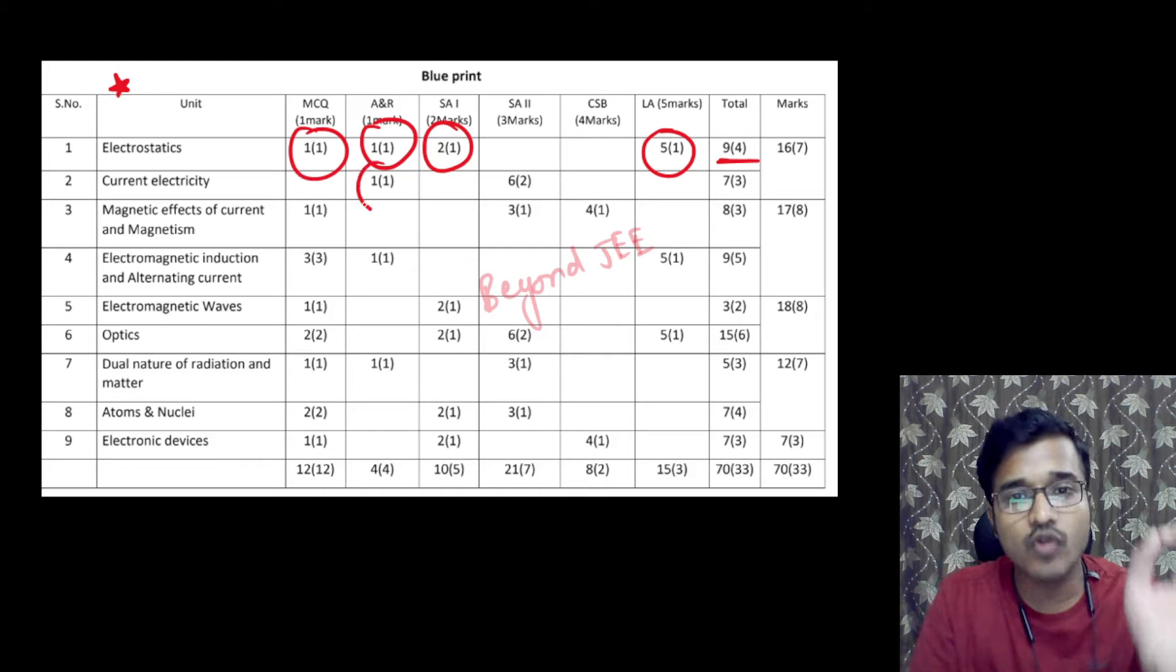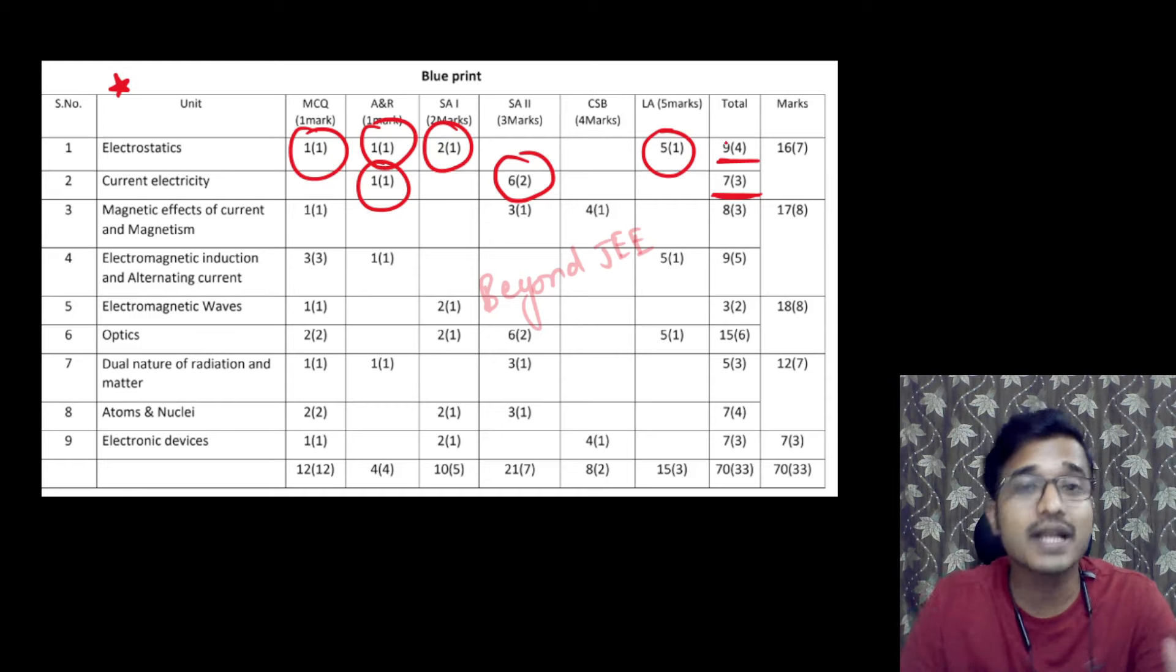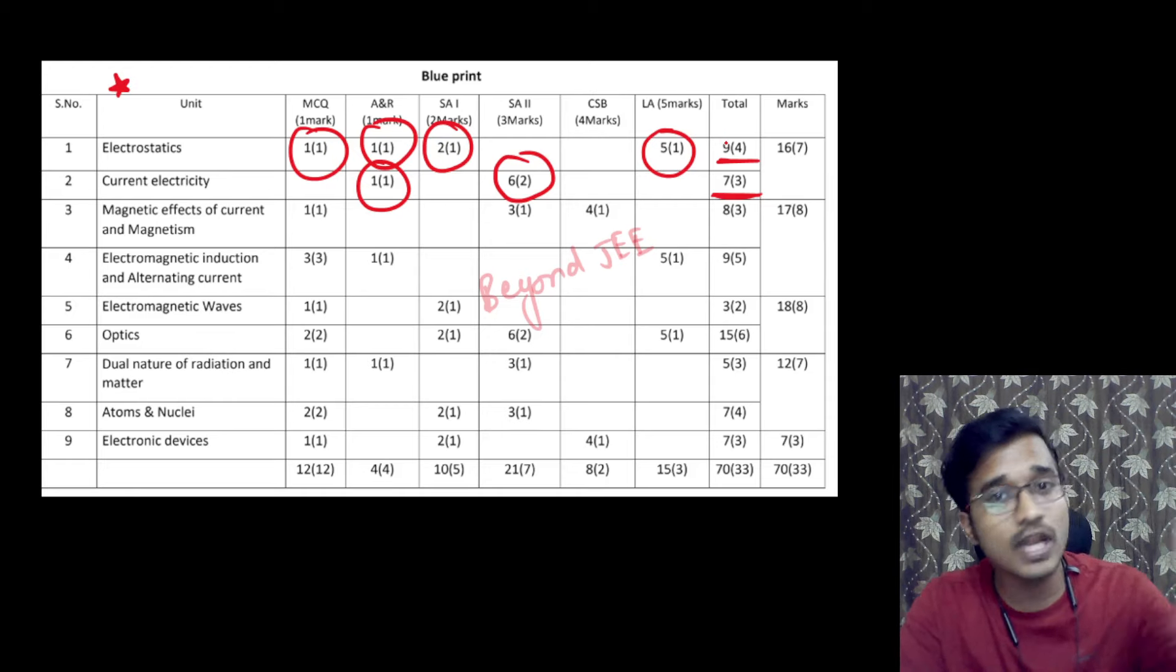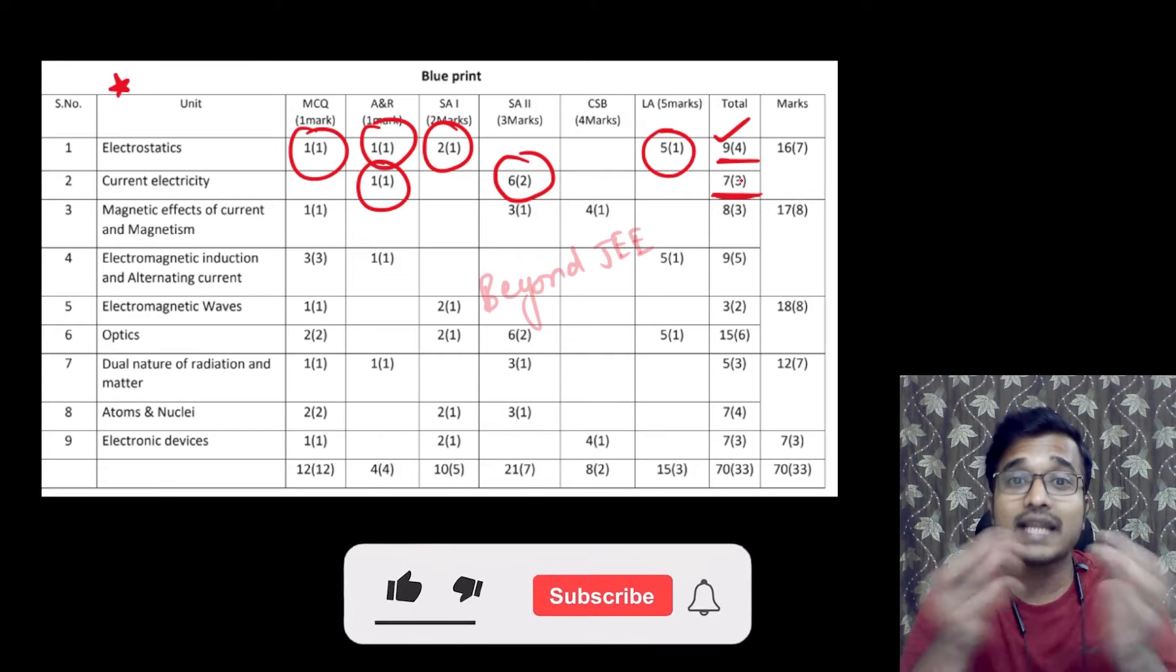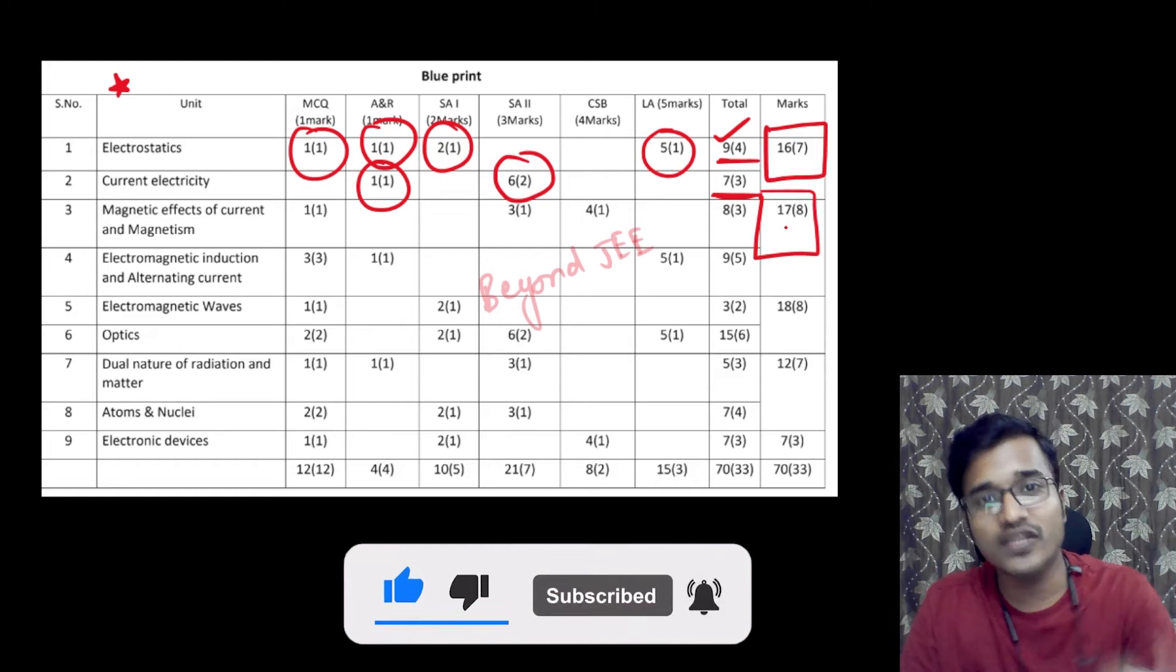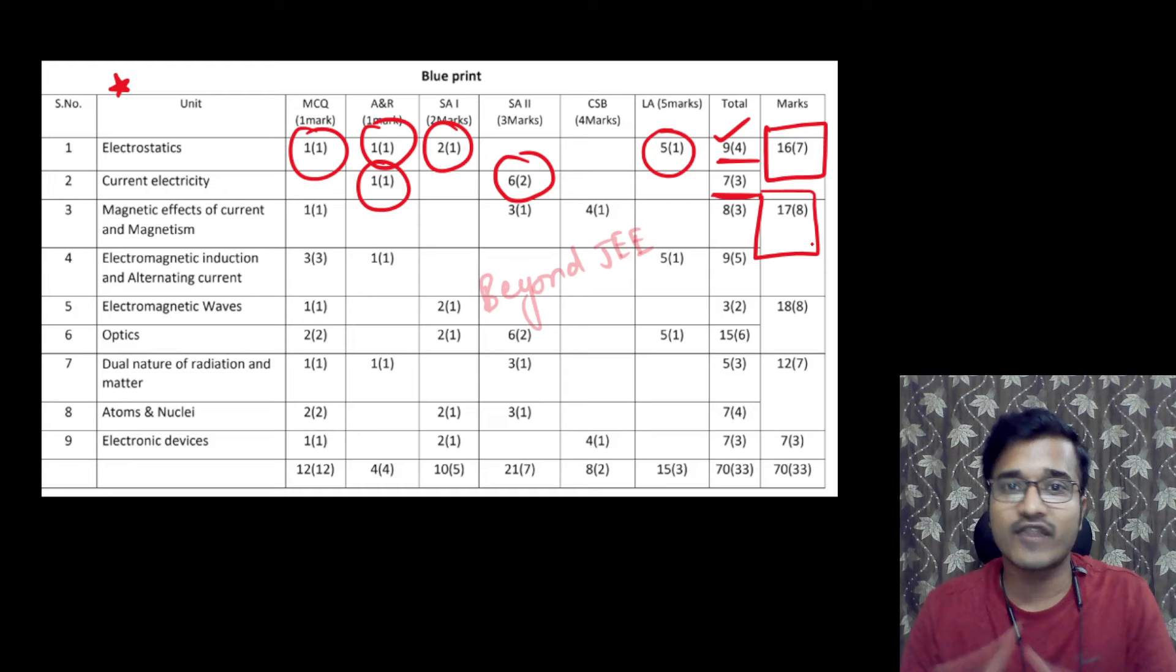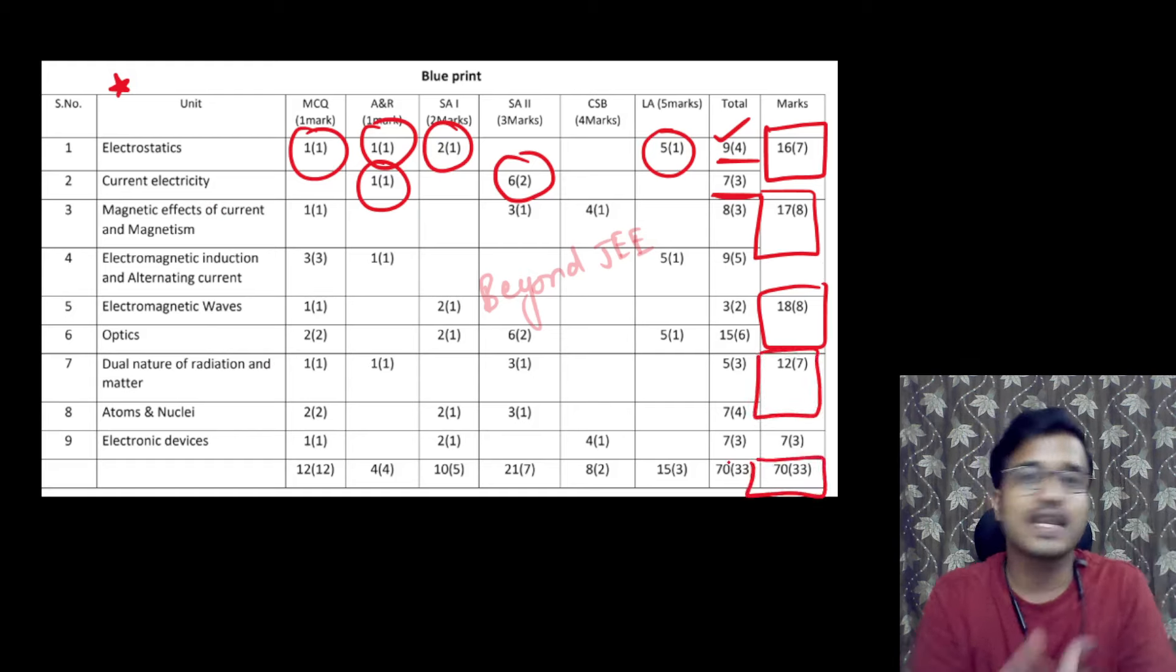The current electricity is 1 mark assertion reasoning and 2 questions that you have short answer which is made of 7 marks. When we go with CBSE blueprint, it is made of 11 marks here. So it is not that electrostatics is made of 11 marks. It is possible that it will be asked for 9 marks. That is why we have prepared three types of blueprint in which the weightage that you have given on CBSE website there will not be difference.